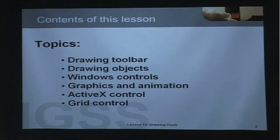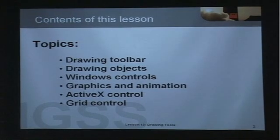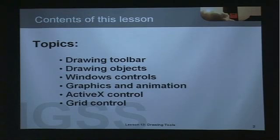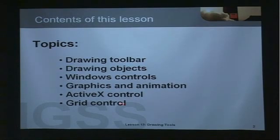In this lesson we will learn about the drawing toolbar in IGSS. We will learn about drawing objects such as lines, polygons, polylines, etc. Windows controls like the combo box, progress bar, slider control, etc. Graphics and animation — you can include both graphics and animated files in IGSS to represent IGSS objects. You can also embed ActiveX controls on mimic diagrams. And finally we'll talk about the grid control, which is a specific IGSS feature.